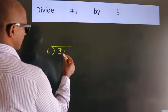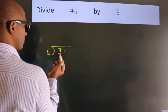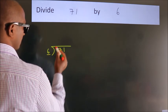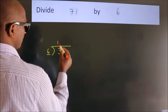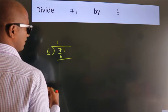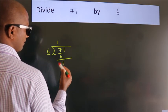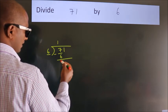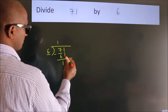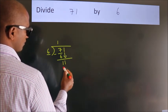Here we have 7, here 6. A number close to 7 in the 6 table is 6 once 6. Now we should subtract. We get 1. After this, bring down the beside number. So, 1 down, so 11.